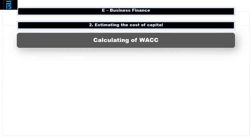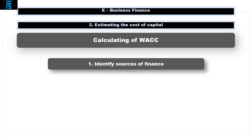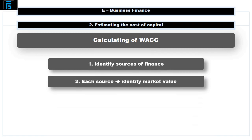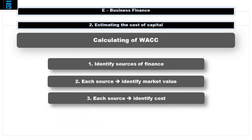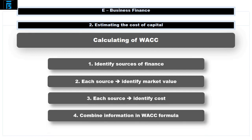An added complication is that different investors face different levels of risk and so will have different expectations as to the return they require. Accordingly, the various returns required have to be averaged to obtain the overall cost to the company, and it is this that is referred to as the weighted average cost of capital. The easiest way to approach the calculation of the WACC is to think of it as a four-step process.